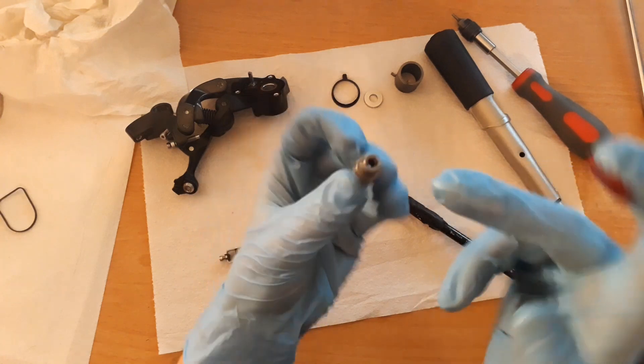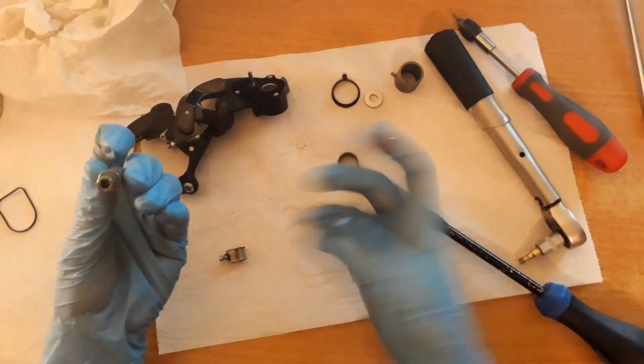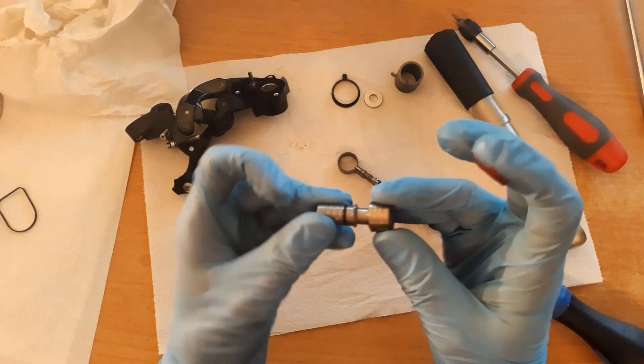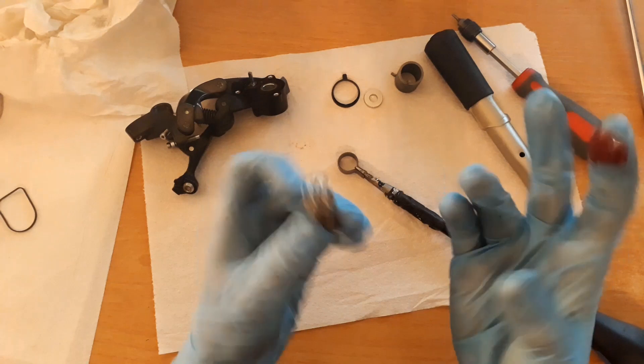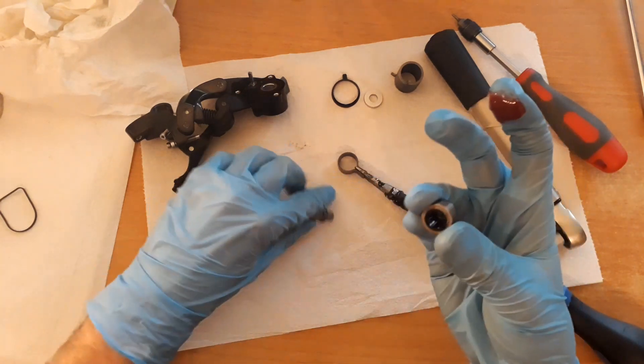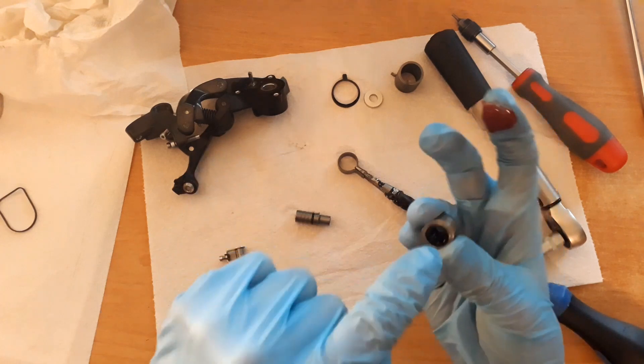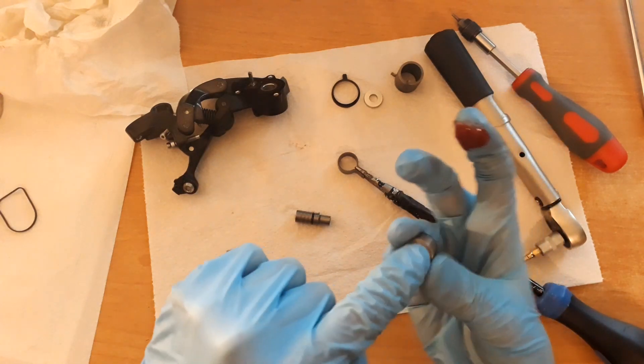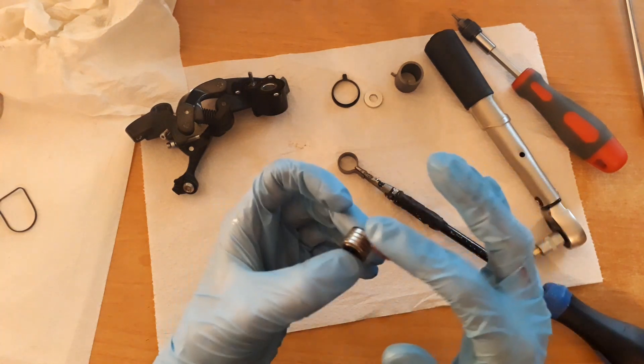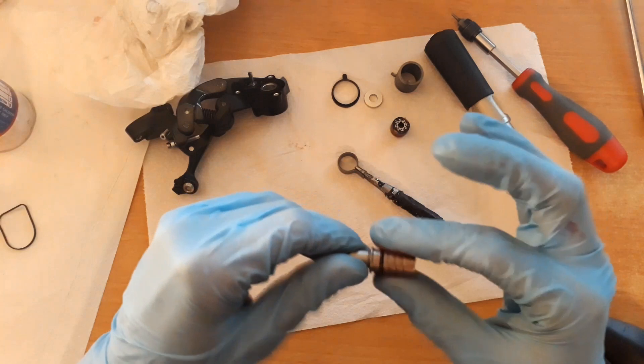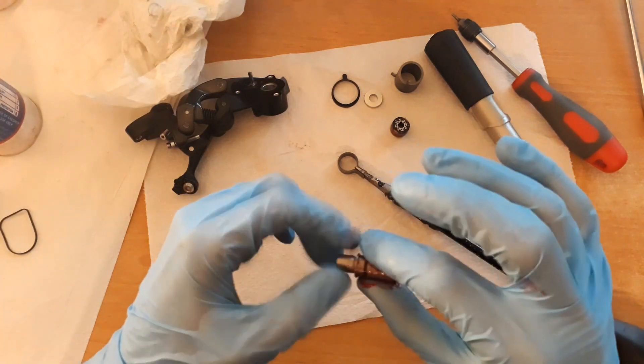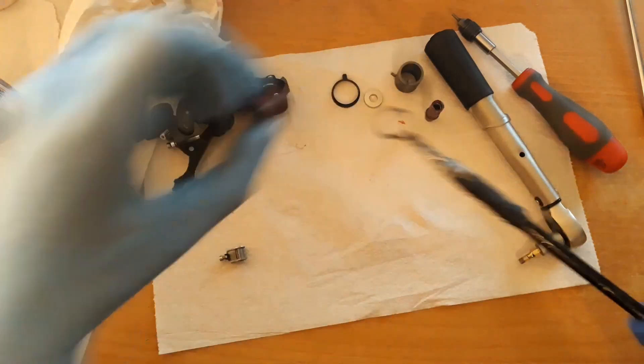This part is where the axle connects to the chain tensioner, and if you grease this part, the chain tensioner might fail. Also for the same reason, do not re-grease or do not grease at all the inner part here. Only the outer part. Where there is grease, there can't be water. Put it back together.